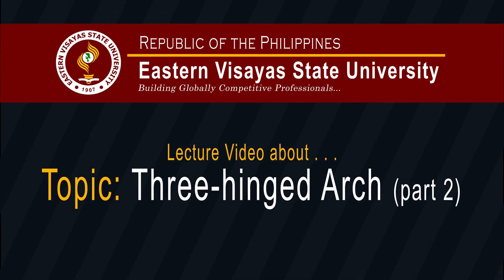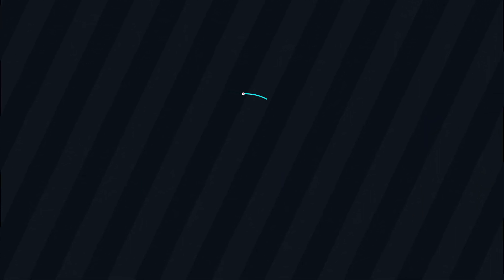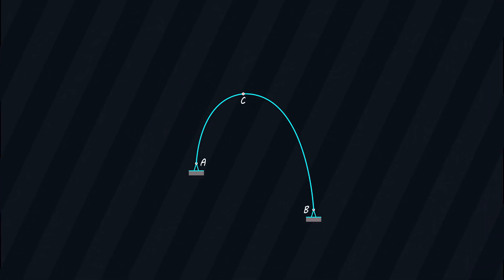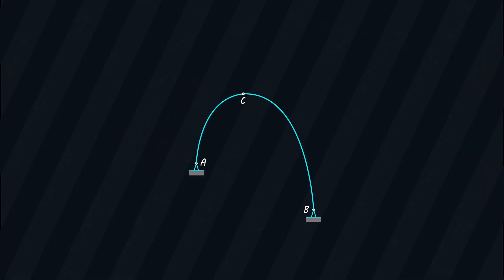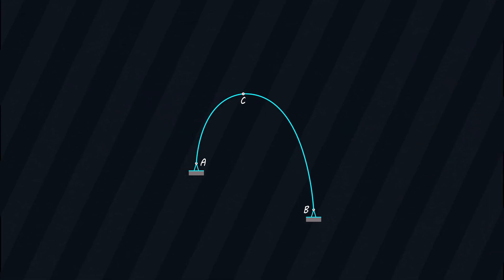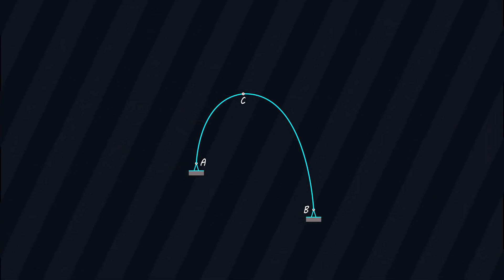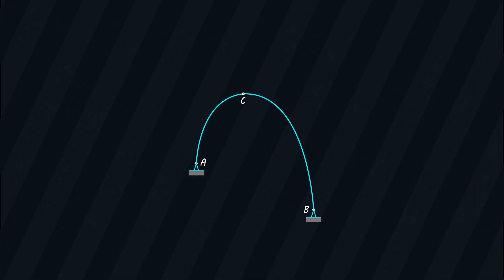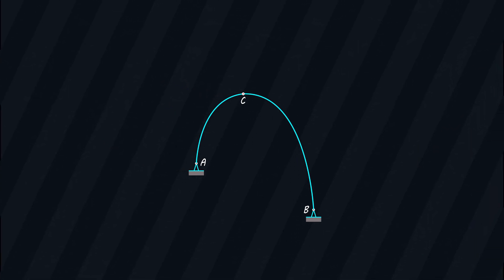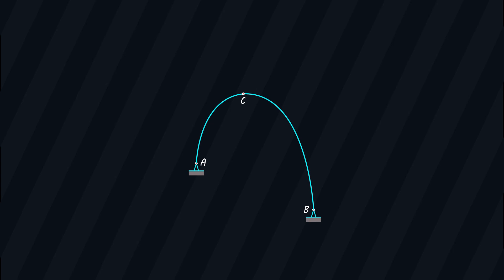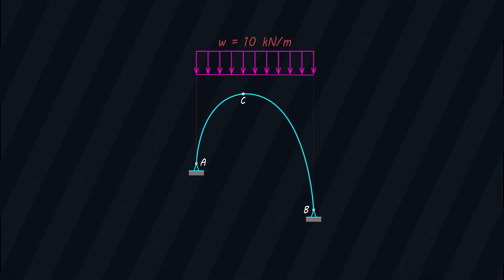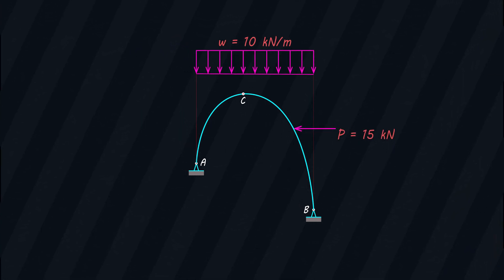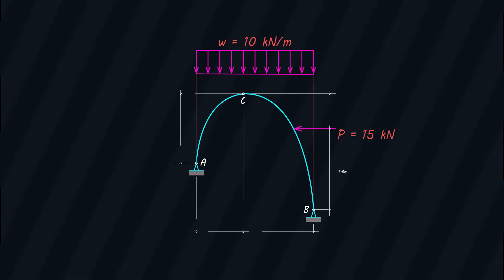Our topic for today is still on the analysis of a three-hinged arch, but on this video we'll focus on the second type of this structure — the one with external supports lying on different elevations. I will show you how we analyze this structure by walking you through the solution to this example. Suppose we are given a three-hinged arch subjected to a uniformly distributed load of 10 kN per meter and a concentrated load of 15 kN directed to the left acting at the point shown in the figure.